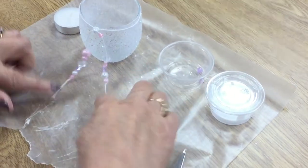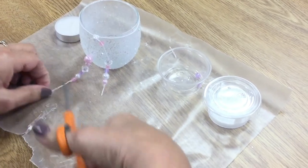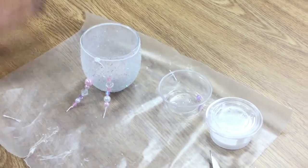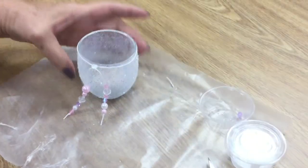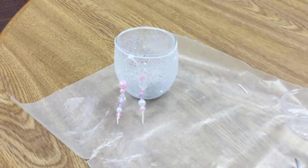Now you can leave the ends on there or you can cut them off with a pair of scissors, whatever you choose. Then all you have to do is place your candle in, and you have your very lovely Valentine take and make.